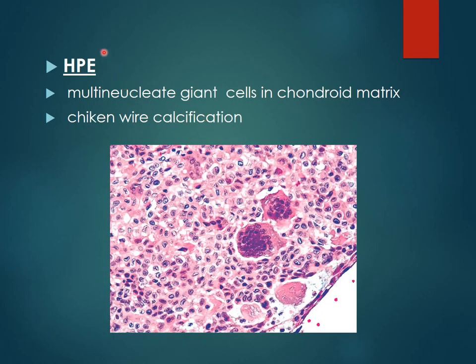On histopathological examination, there are multinucleate giant cells in the chondroid matrix, and chicken-wire calcification is pathognomonic. This giant cell can be seen within the chondroid matrix.